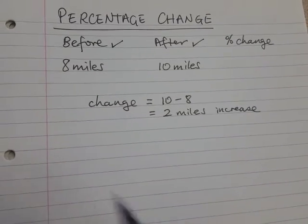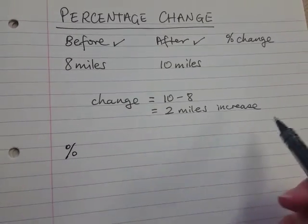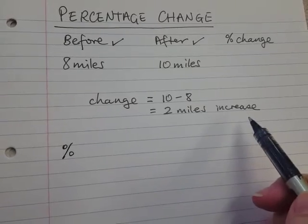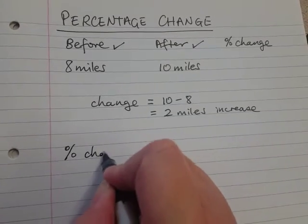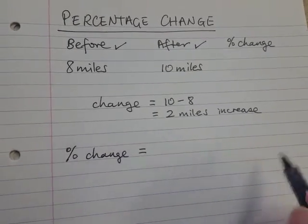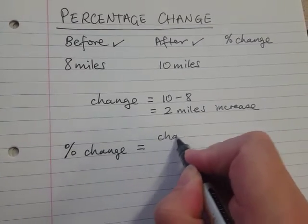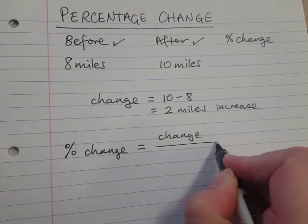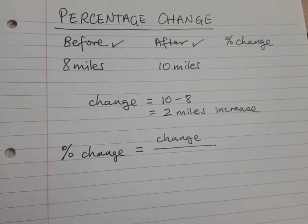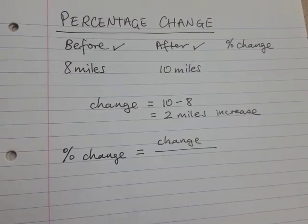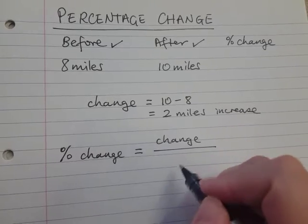And to get the percentage change, so in this case it's a percentage increase, what you do is you take how much it changed by and divide it by the number you had before the change. So the before amount.